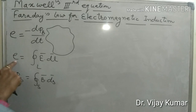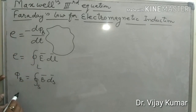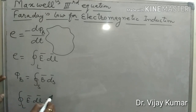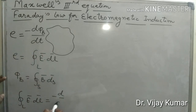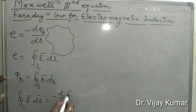Putting the values of induced EMF and magnetic flux into this equation, the line integral of the electric field becomes equal to minus d/dt of the surface integration of the magnetic field.